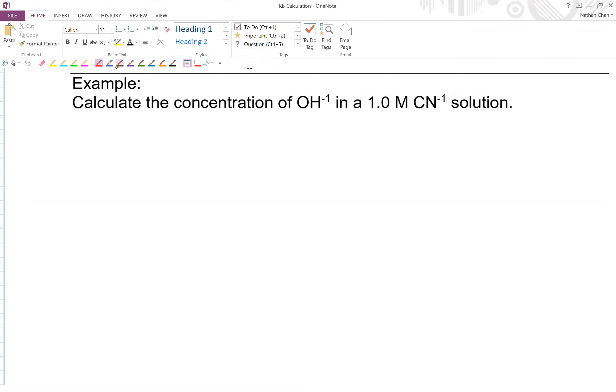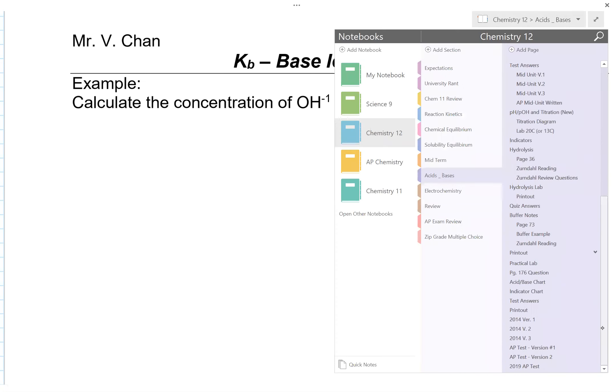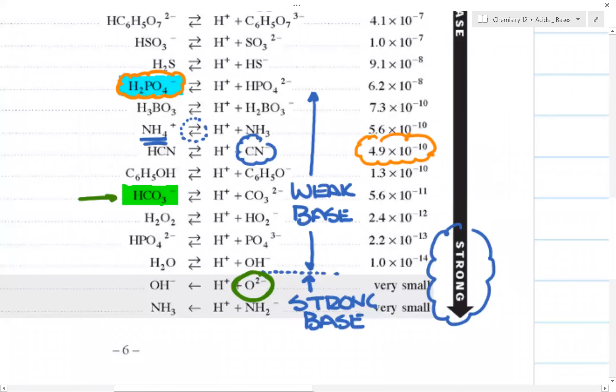Now, when you take a look at this, the first thing you need to recognize that CN⁻¹ is a weak base. What you can do is check your acid base chart, and you see for the location of CN⁻¹.